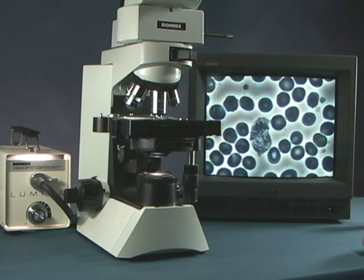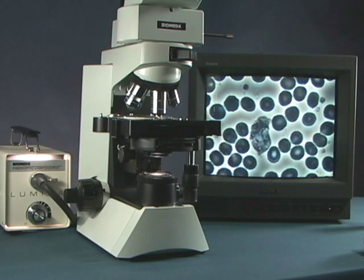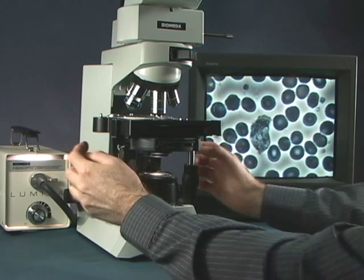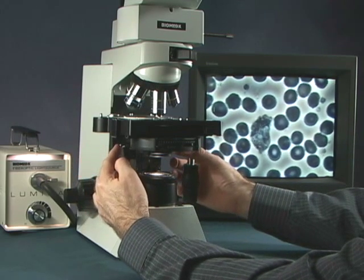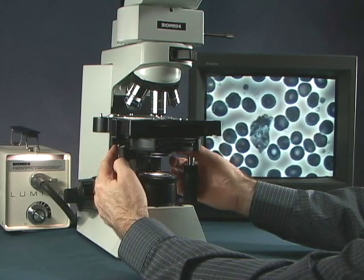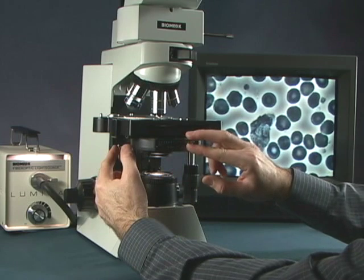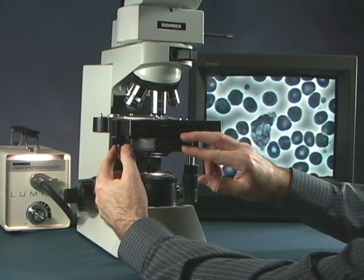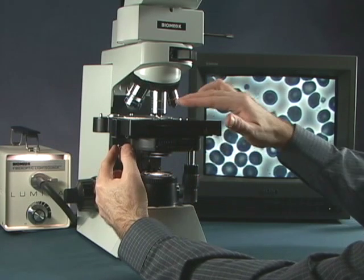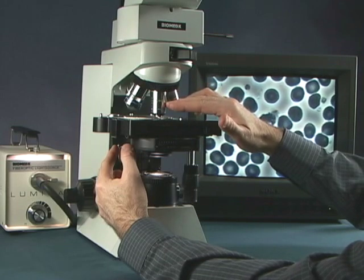With that in place, when we look into the centering telescope, we will actually use these adjusting knobs right here on either side of the condenser to adjust the phase annulus that is in the condenser here to be in alignment with the phase ring that is etched into the objective right up here.